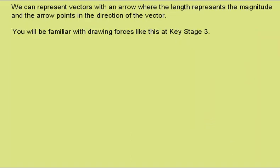We can represent vectors with an arrow, where the length of the arrow represents the magnitude, and the arrow points in the direction of the vector. You'll be familiar with drawing forces like this at key stage 3. For example, here we have an object with a force of 4 newtons acting to the right. If there was a bigger force, the arrow would be longer, and so on.